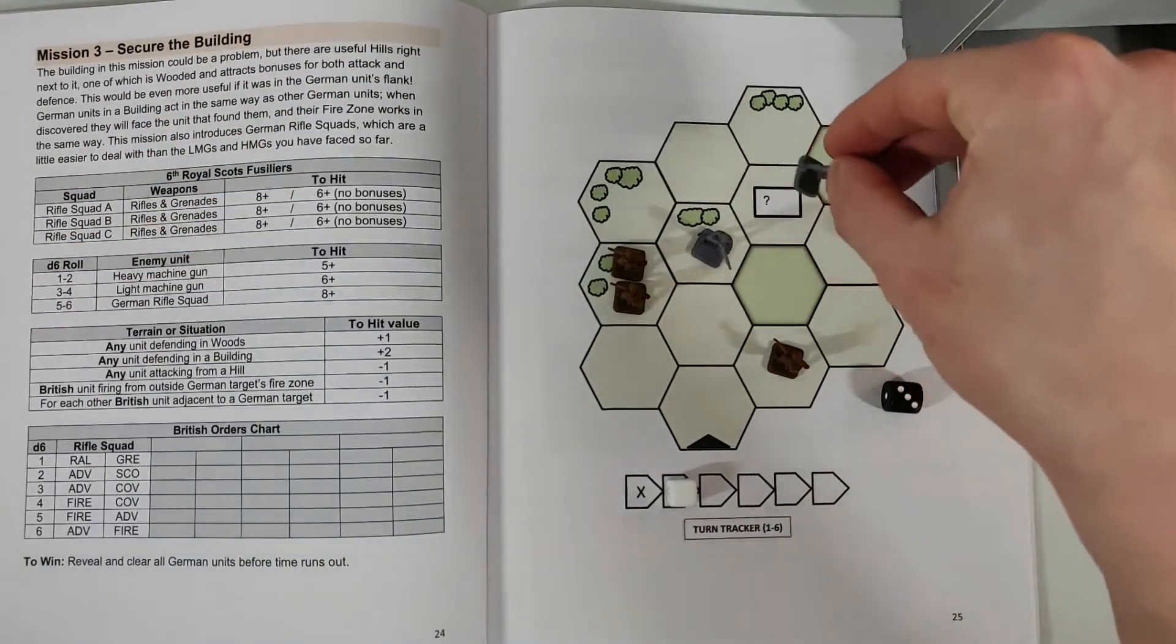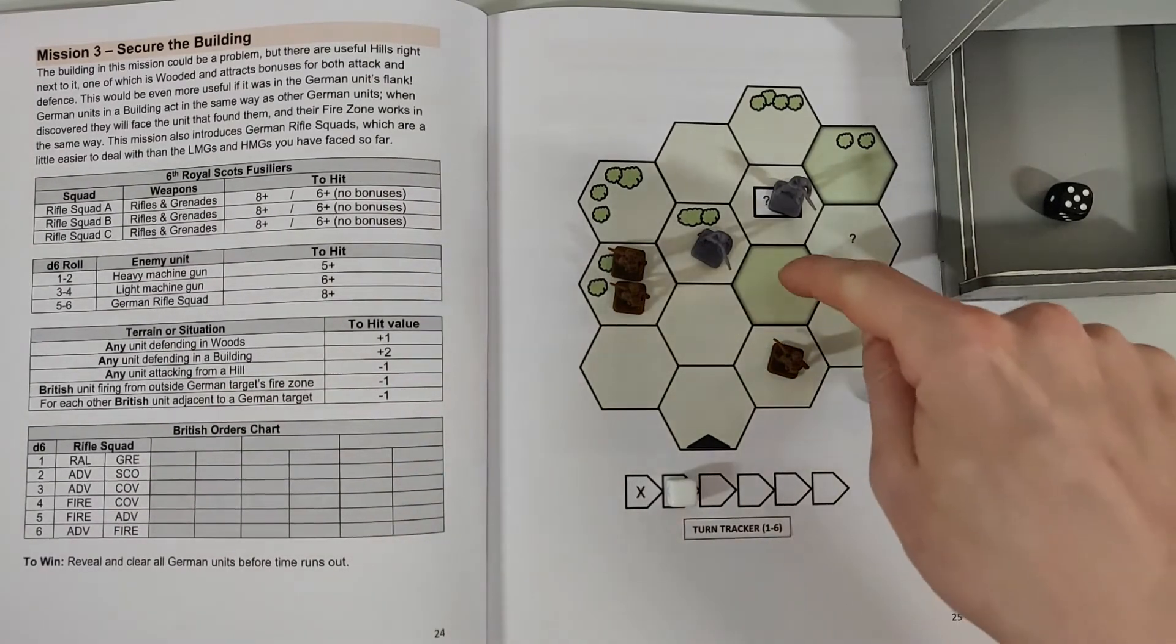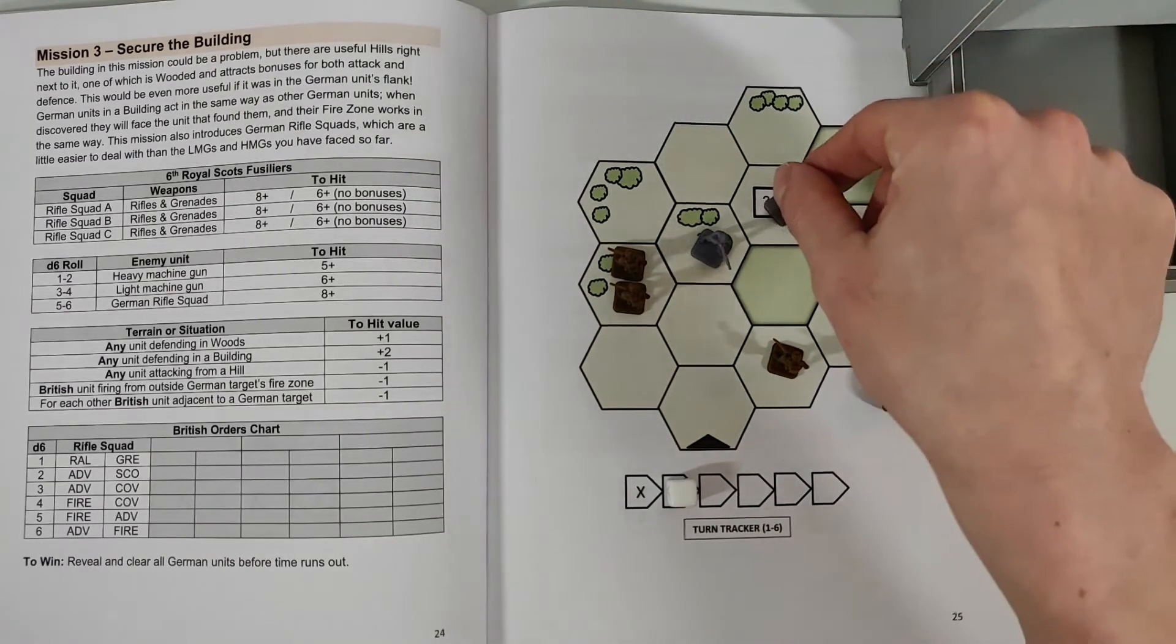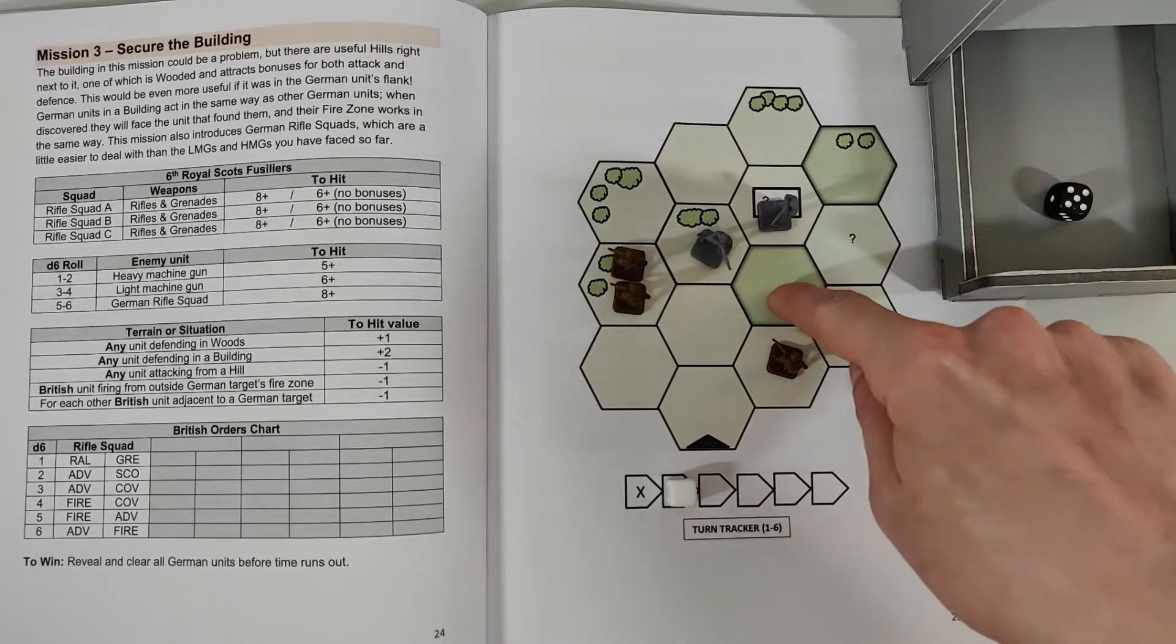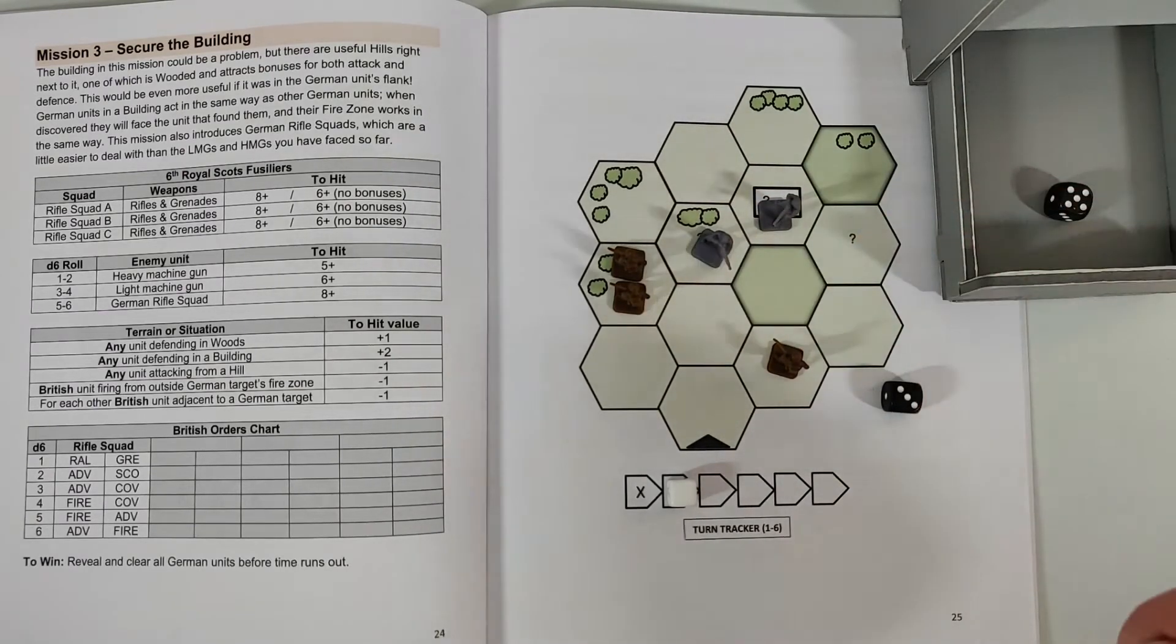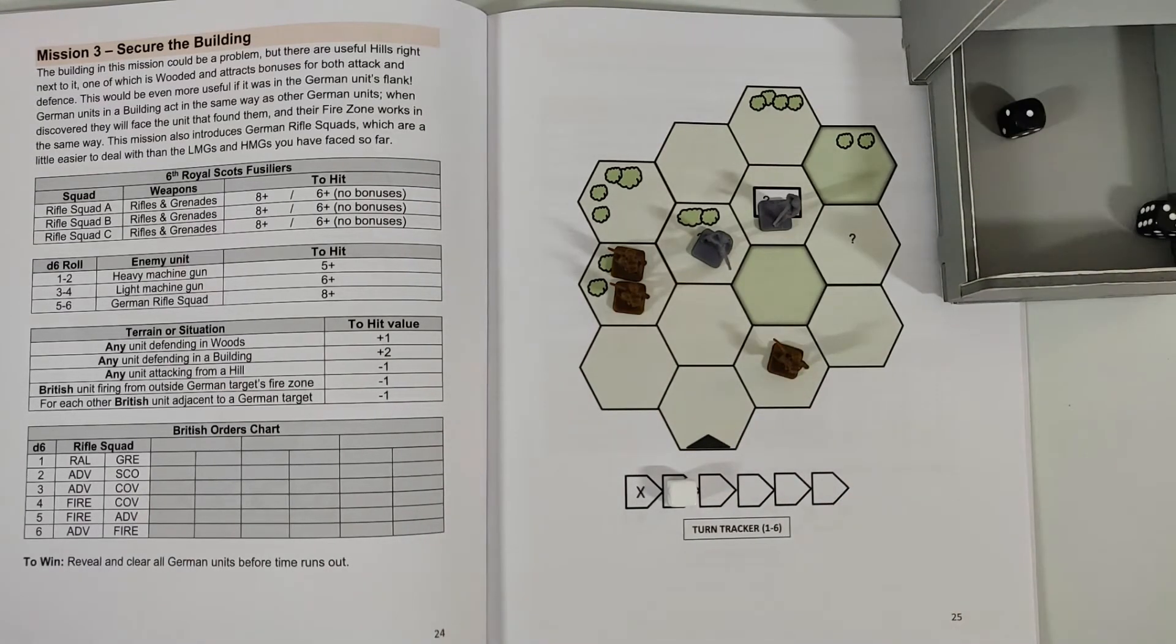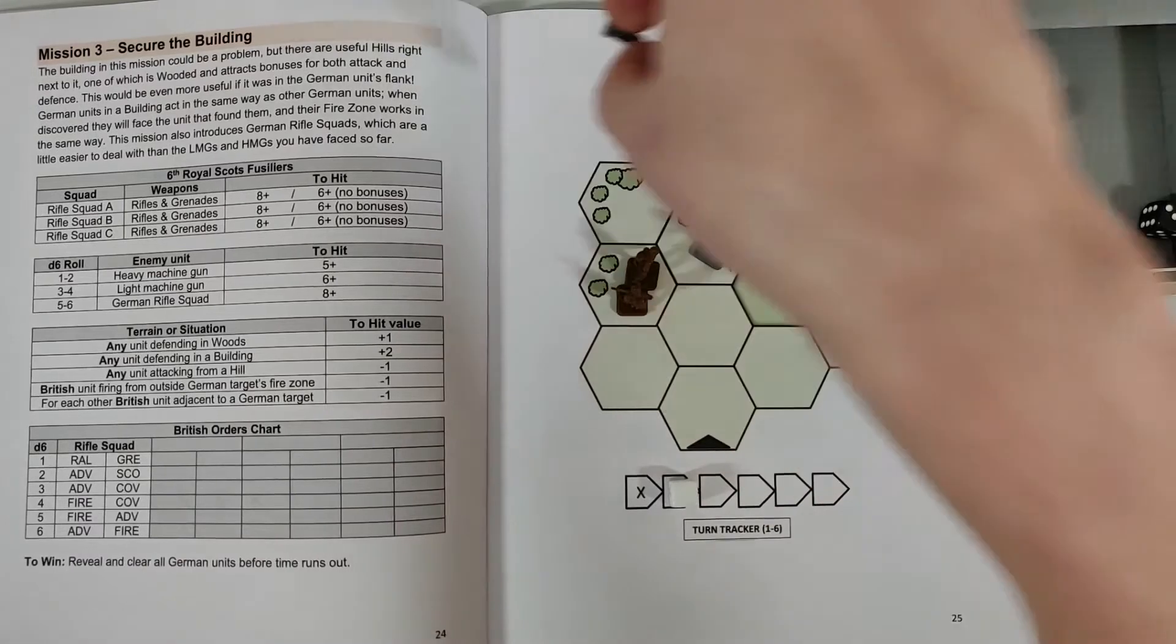And we have another rifle squad there. So we decide on facing, and I think, okay, so I'm gonna make him face down. So he's gonna face down here, and that means his fire arc is gonna be these three hexes. Okay, and then it's our last guy. We roll one and three - rally and grenades and advance and cover. So he's gonna go ahead and move up here, and then he's gonna use cover.